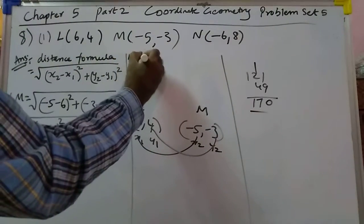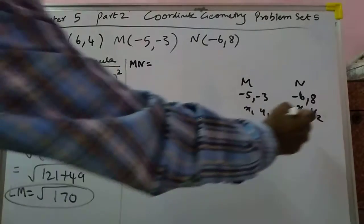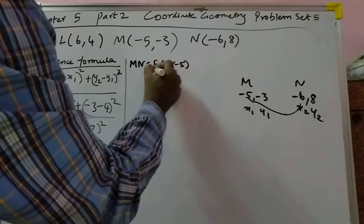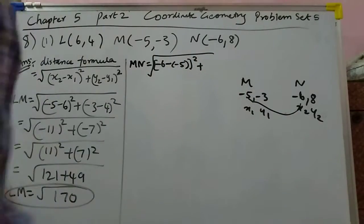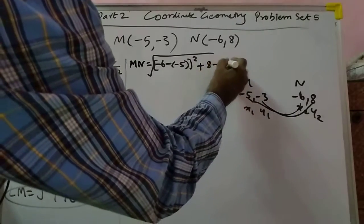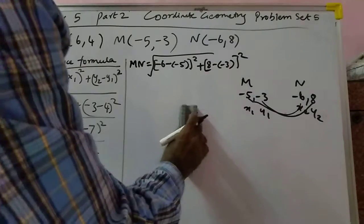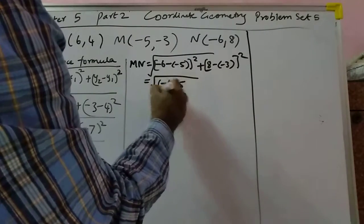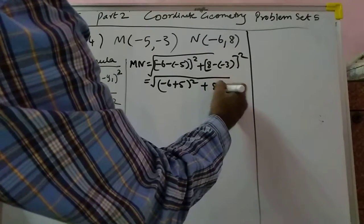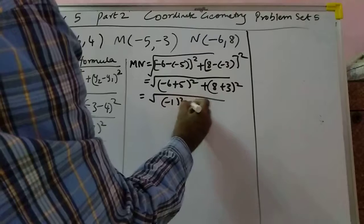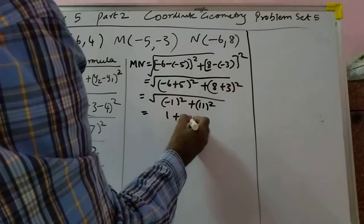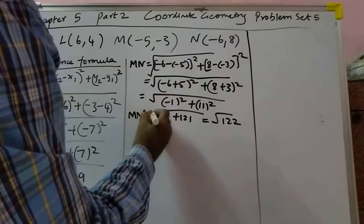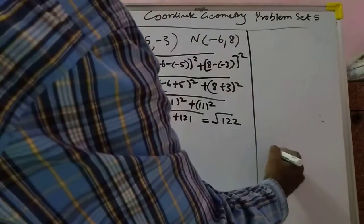For MN, that will become (minus 6 plus 5) the whole square plus (8 plus 3) the whole square. It will become (minus 1) squared plus (11) squared, that is 1 plus 121, which is 122. So MN equals root 122. Now let us calculate for LN.